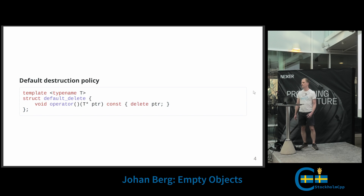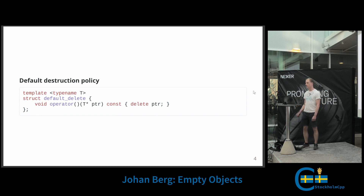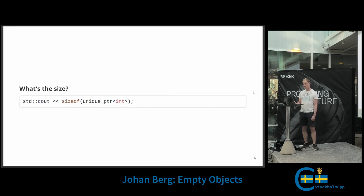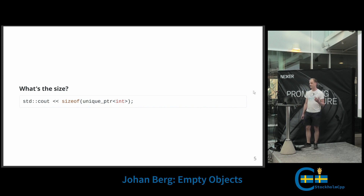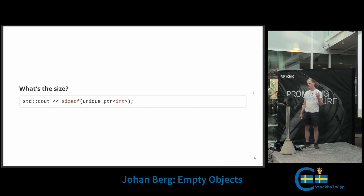So if the user doesn't provide a custom deleter, this one will be used by default. What's the size of our unique pointer here? It has a pointer member which will be eight bytes assuming a 64-bit system, and it also has this deleter object — but the deleter is just a stateless object, so it shouldn't take up any space, right?